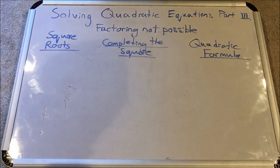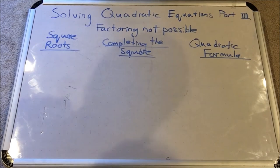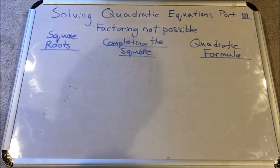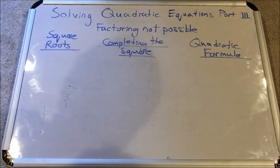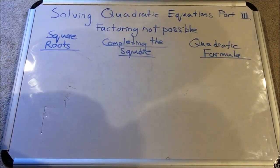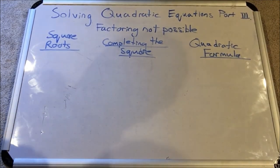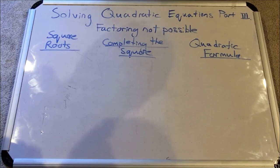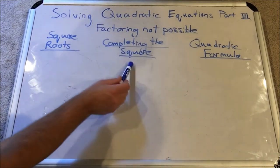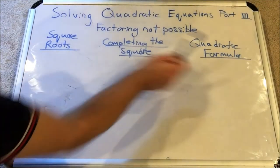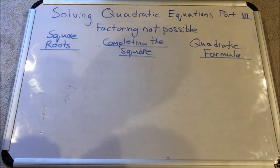Hello everyone and welcome to TutorTerrific. Today we are going to look at part three of our solving quadratic equations series. It's the last part, and these are the methods we are going to use when factoring is not possible or does not appear to be possible by the means in the first two parts. The three types of methods we are going to look at today are solving by square roots, completing the square, and the quadratic formula.